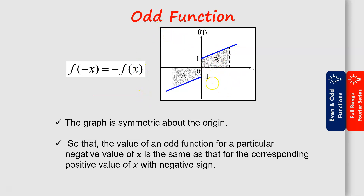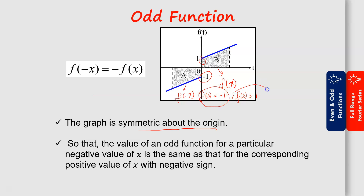For example, if you have this graph, the graph is actually symmetric about the origin. Here this one is f(x) and this one is f(-x). For example, f(0) equals negative 1 and for the other part f(0) equals 1. If we take negative of this function, negative f(0) will equal negative 1. So f(-x) equals negative f(x), which equals negative 1 — we can say the function is an odd function.